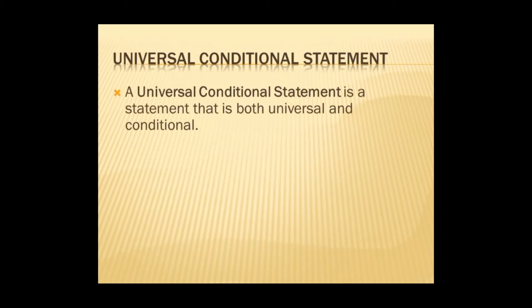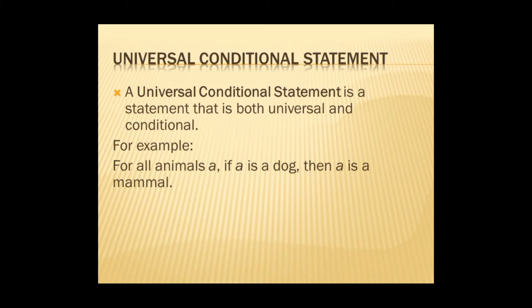Next is the universal conditional statement. A universal conditional statement is a statement that is both universal and conditional. We must see 'for all', 'for every', or 'for everything' — which makes it universal — along with 'if' and 'then' — which makes it conditional. For example: for all animals a, where a is the variable for animals, if a is a dog, then a is a mammal. We can see here the 'for all', which indicates a universal statement, and 'if' and 'then' as the conditional part.